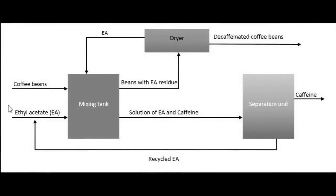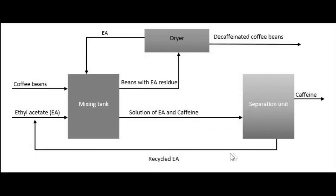In the feed stream — the entering stream to the mixing tank — we have the coffee beans and the solvent ethyl acetate. They both enter the mixing tank and remain there until the removal of caffeine from the coffee beans is achieved. After that, we have two output streams. One of them is the drain solution of the solvent ethyl acetate and caffeine. This stream enters the separation unit, where the solvent is separated from the caffeine and returned to the mixing tank, while the concentrated caffeine goes into further processes.